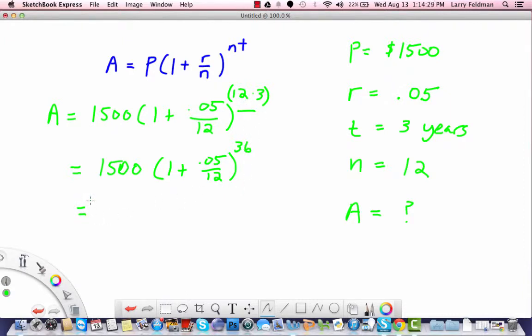Now, using a calculator, we would find out that the final amount is $1,742 and 21 cents. So in this example, the person started with $1,500 and after three years, they ended up with $1,742 roughly.